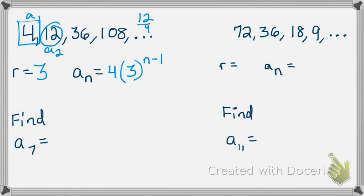Now, whenever they ask you to find something like a sub 7, that just simply means you plug in 7 wherever you see n. So take your explicit formula and instead of writing n minus 1, you're now going to write 7 minus 1. And when you type all of that in the calculator, you get 2,916. That means if I kept going in my sequence, that will be my 7th term.